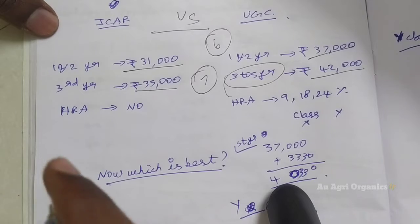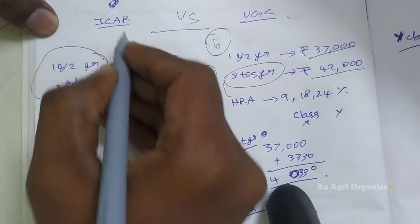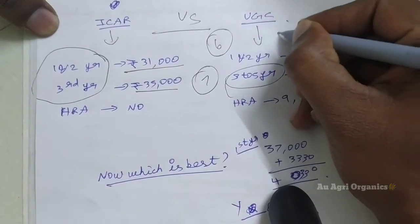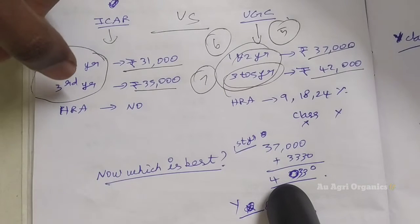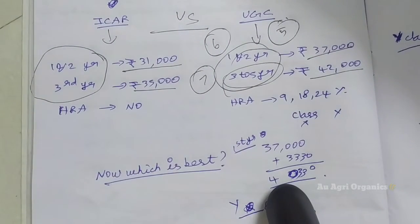So another one difference, you can able to see. This fellowship is only for 3 years with regard to ICAR. But with regard to UGC, this fellowship is up to 5 years. For some of the students, PhD cannot be completed within 3 years. So you can get fellowship up to 5th year. This is another one thing.